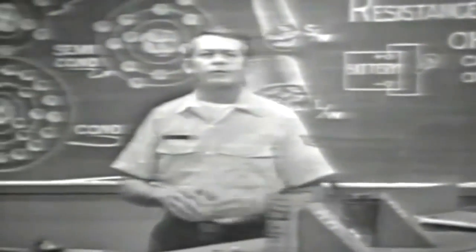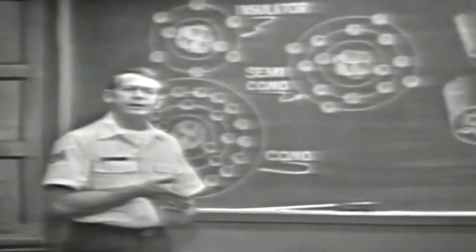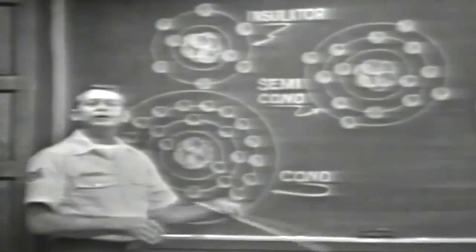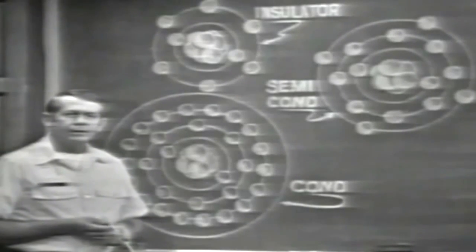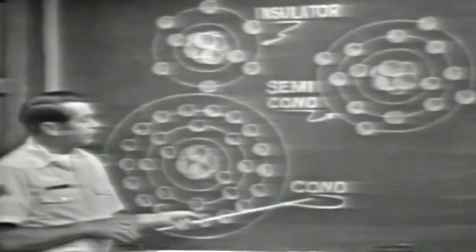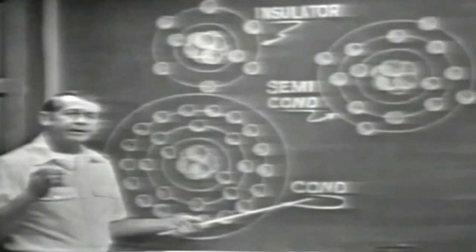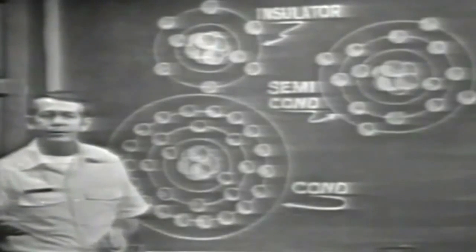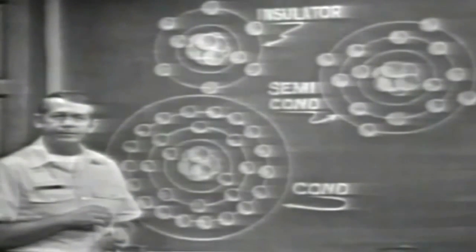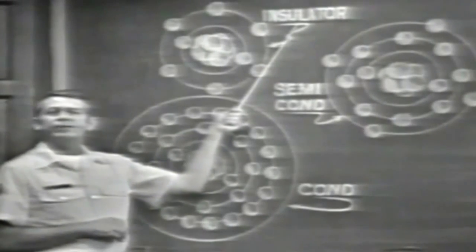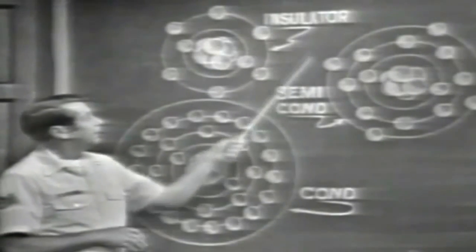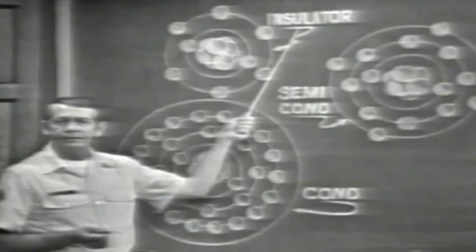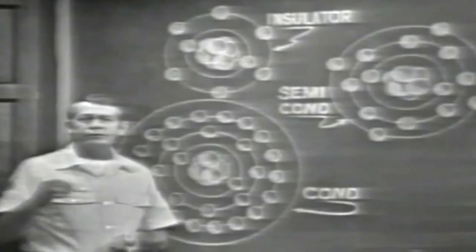Why do some materials offer a lot of opposition and others very little? Basically, it's the atomic structure of the material. Conductors have many free electrons — they allow current to flow with ease, so they have very little resistance. That's why the copper wire burned up earlier. On the other hand, insulators have very few free electrons; in most cases they prevent current flow, so insulators have high resistance. That's why large voltage was required to move electrons through air.